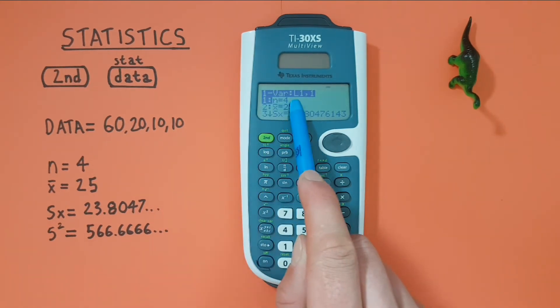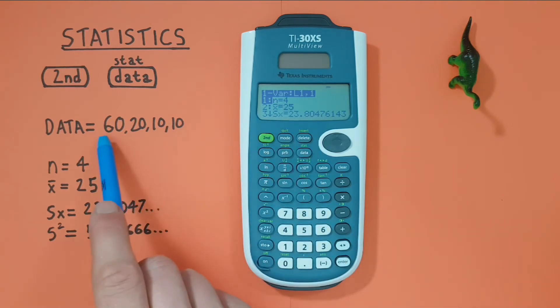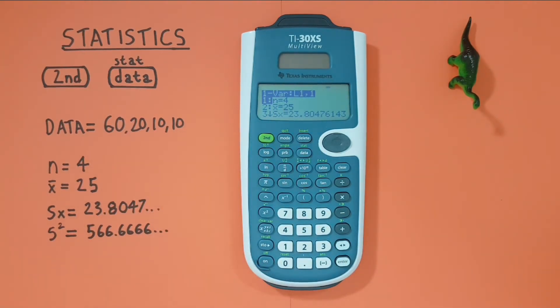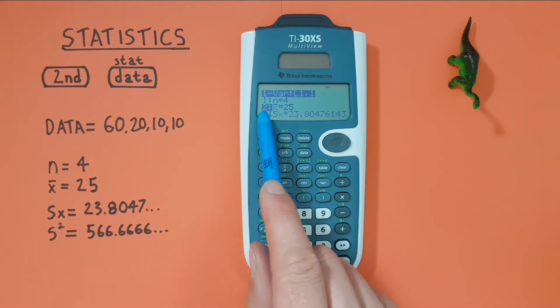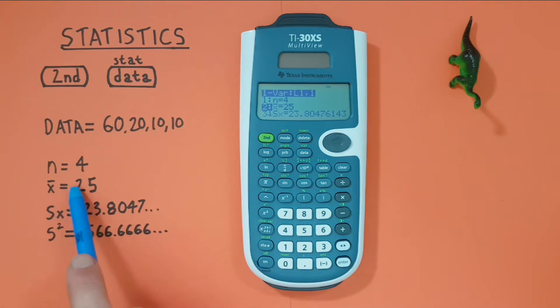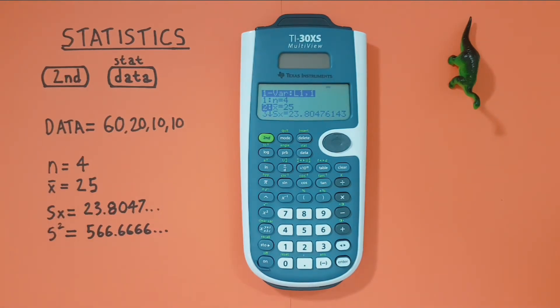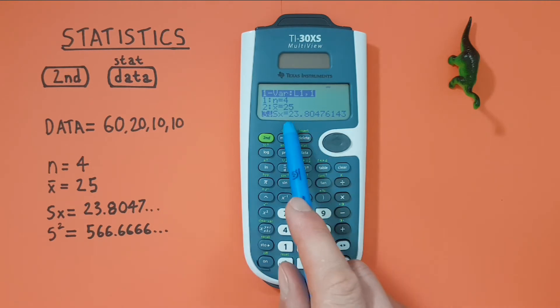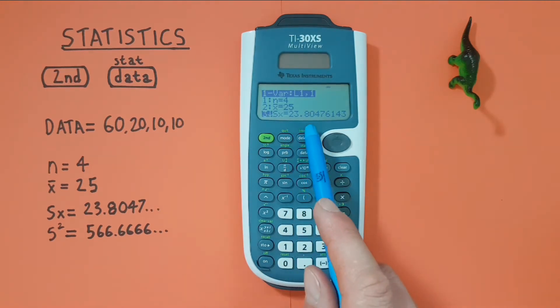First we have n equals 4, which is the number of variables in our data set. Which is correct. If we scroll down we get x bar or mean equals 25. Which is correct. Scroll down again and we get large sigma x or sample standard deviation, which is 23.8047 etc.